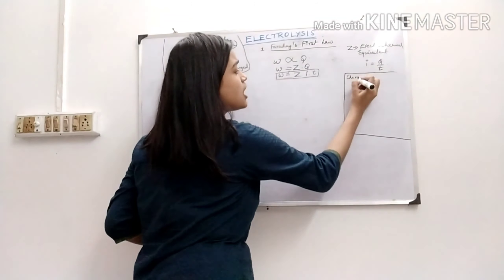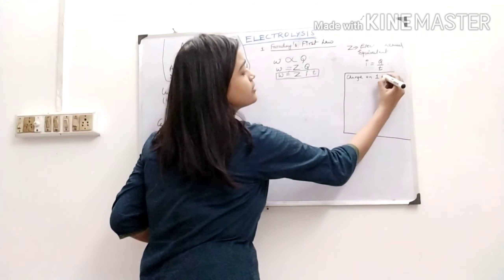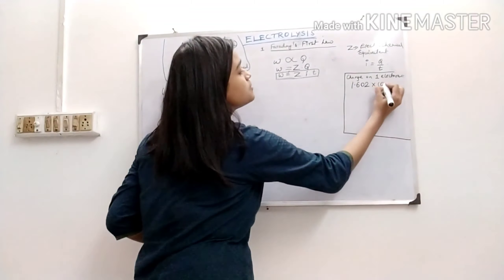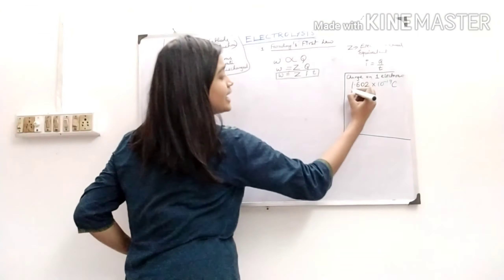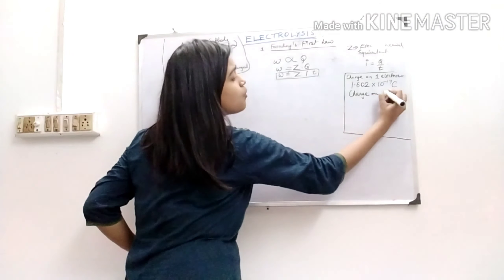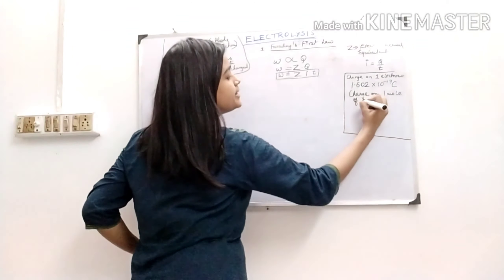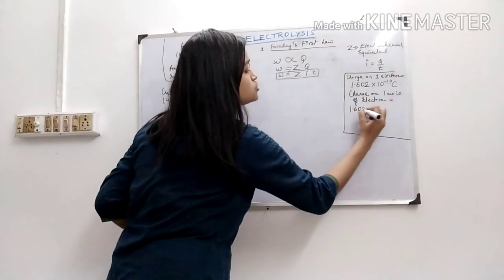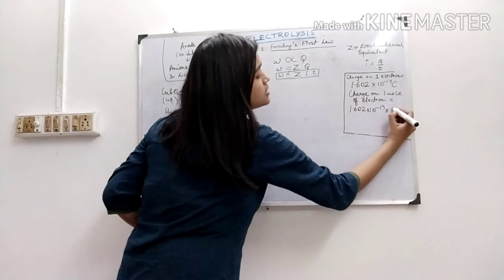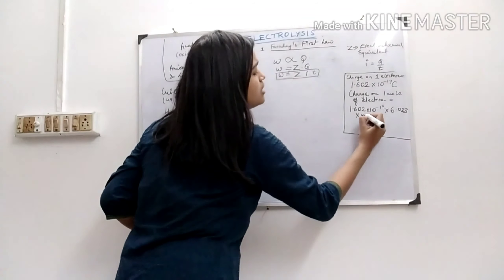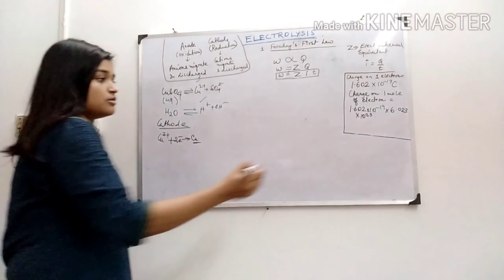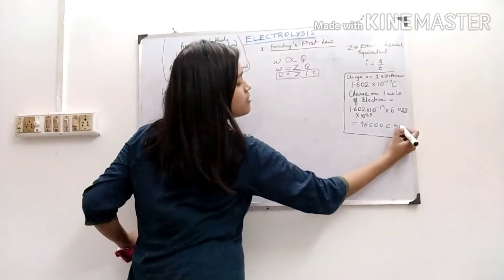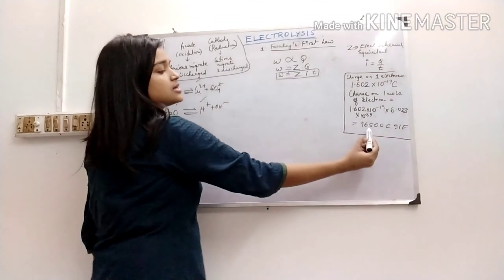The charge on one electron is 1.602 × 10⁻¹⁹ coulombs. Now, if I calculate the charge on one mole of electrons, it will be equal to 1.602 × 10⁻¹⁹ multiplied by 6.023 × 10²³ (Avogadro's number). This gives a value of 96,500 coulombs, which is 1 Faraday. This is how the Faraday constant is derived.